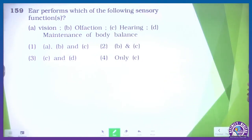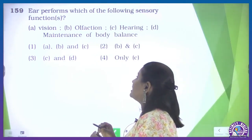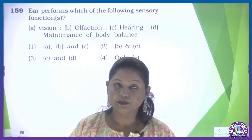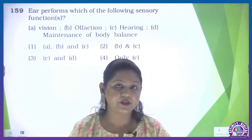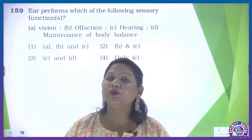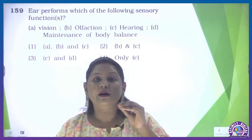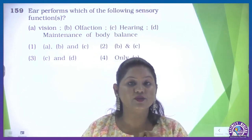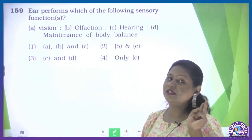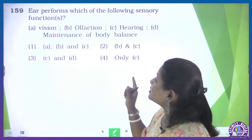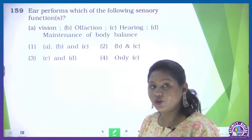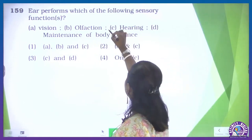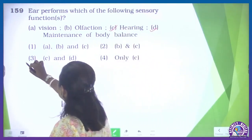Question 159: the ear performs which of the following sensory functions? The options are vision, olfaction, hearing, and maintenance of body balance. The ear is our phonoreceptor, which helps collect sound waves. Also, with the help of the vestibular apparatus present in the internal ear, it helps maintain balance. So the ear performs two functions: hearing and maintenance of body posture. Vision is done by the photoreceptor; olfaction is for smelling via olfactory receptors (the nose). So the correct answer is C and D — the third option.